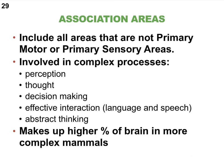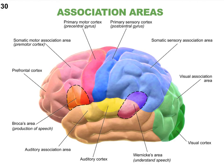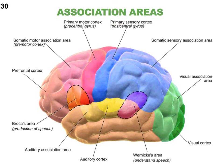Association areas are very well developed in humans and in some animals like the greater apes. Typically, association areas do not start with the term 'primary.' After correcting the slides: we have primary visual cortex, primary auditory cortex, primary somatosensory cortex, and primary motor cortex. The remaining ones — Wernicke's area, Broca's area, prefrontal cortex — are association areas.